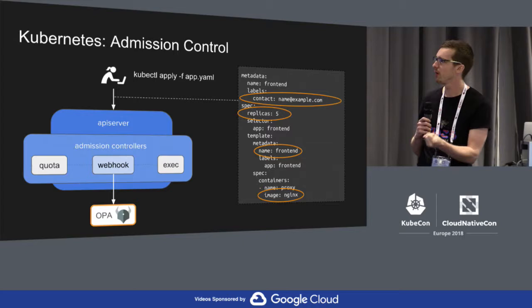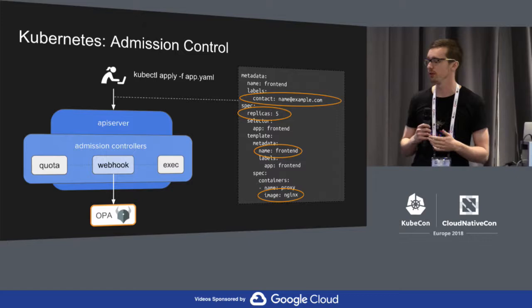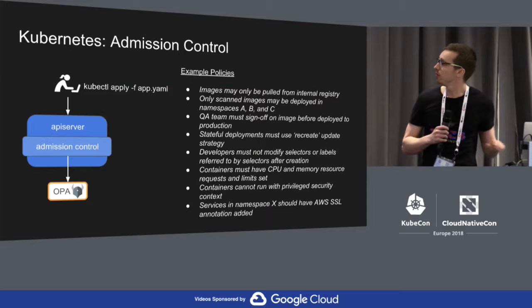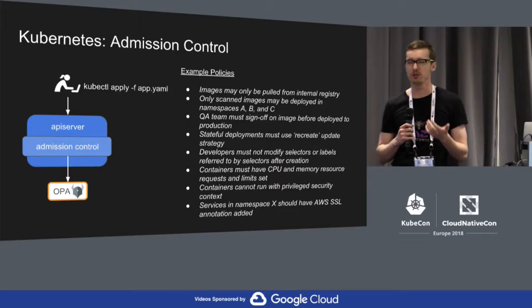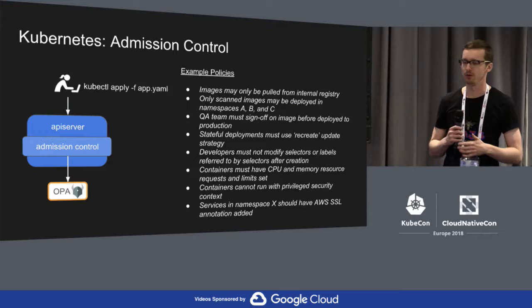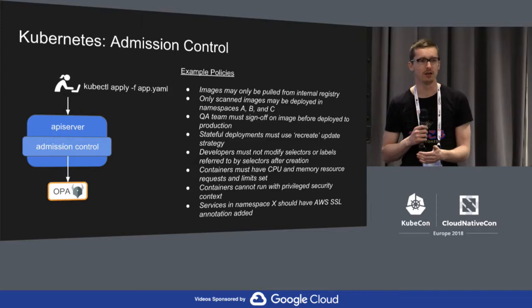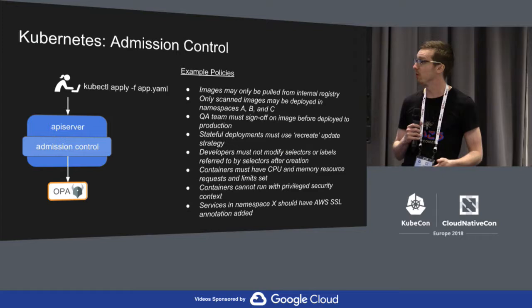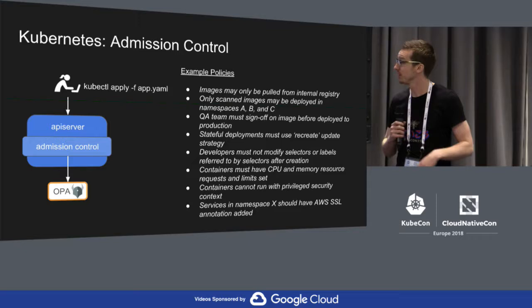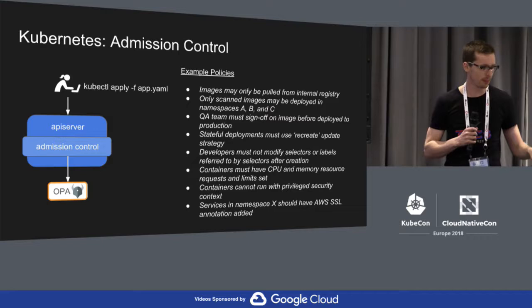Admission control is really important — every time you run kubectl against your API server with a manifest, there are all kinds of fields that are interesting from a policy perspective. You might want to enforce that all objects have a contact email, that replicas for critical applications are set to some minimum value, that they follow a naming convention, or that images are pulled from a common repository. OPA lets you write these kinds of policies. A lot of these policies are very organization-specific, so you don't want to hard-code them into the upstream Kubernetes distribution. They're hard to predict and they evolve over time, so you want operators to decide what policies are important for their organization.